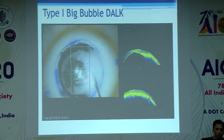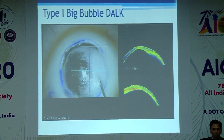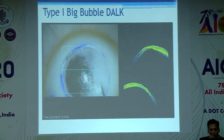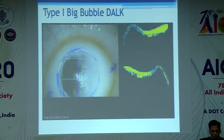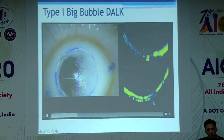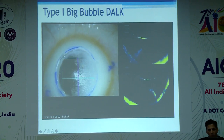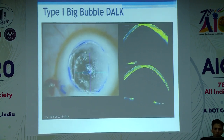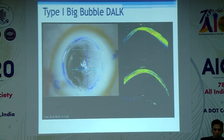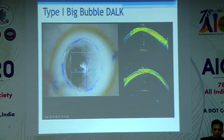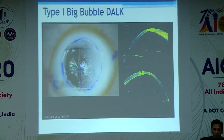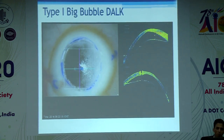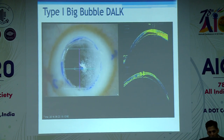This is the video of a type 1 big bubble DALK. You can see that the type 1 big bubble limits itself to the keratectomy site — it doesn't go beyond the limbus. It starts from the center and goes towards the periphery. In the inverted image, the Descemet's membrane has fallen back. As you give a nick in the overlying stromal layers, you can see the Descemet's membrane march towards the overlying stromal layers as the air egresses out, confirming the bubble is in the correct supra-Descemet's membrane compartment.